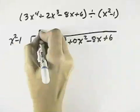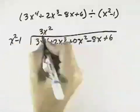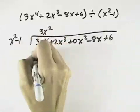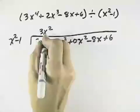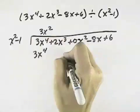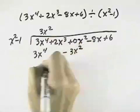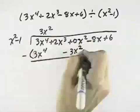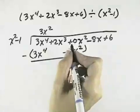x squared goes into 3x to the 4th, 3x squared times. Multiply, and I get 3x times x squared is 3x to the 4th. 3x squared minus 1 is a minus 3x squared, so I'll put that under the x squared column, and subtract. The 3x to the 4th cancel.